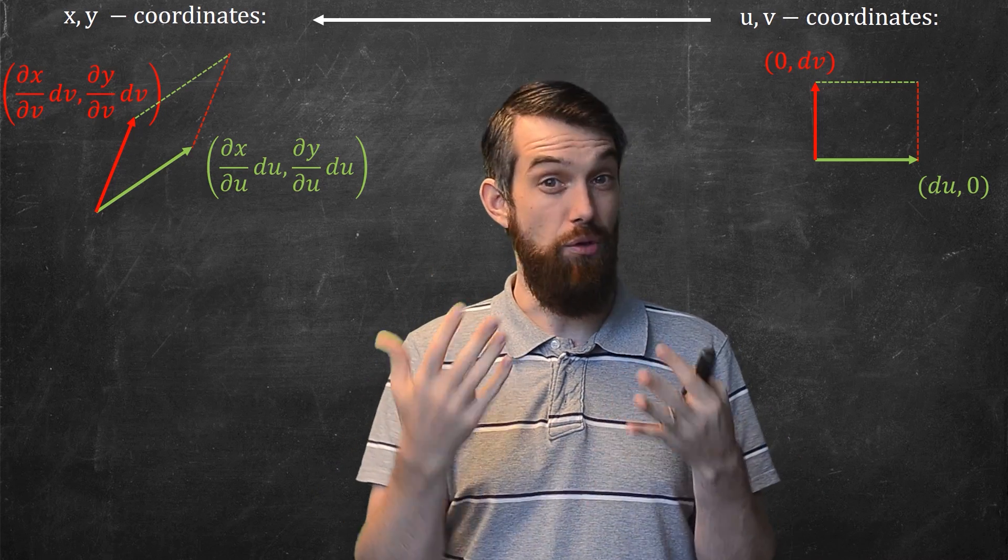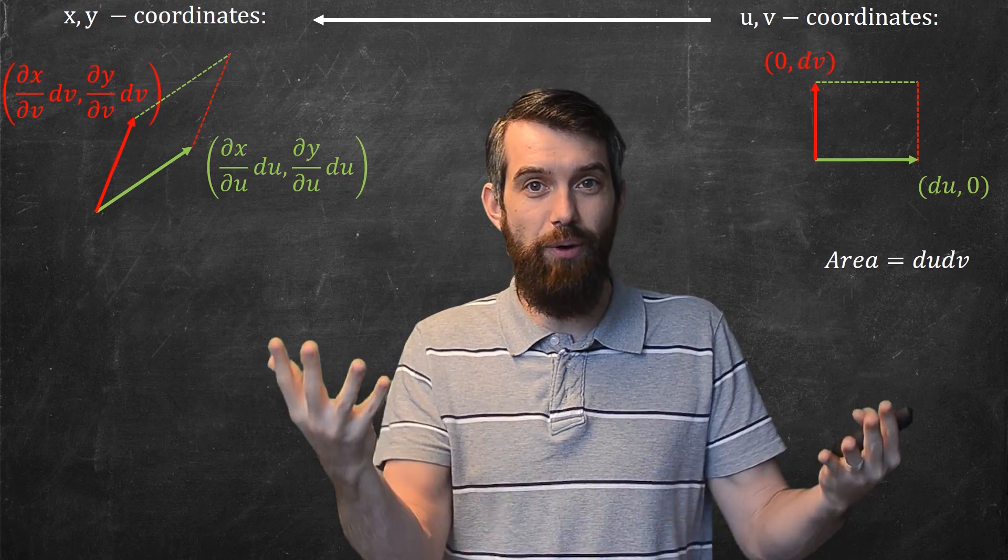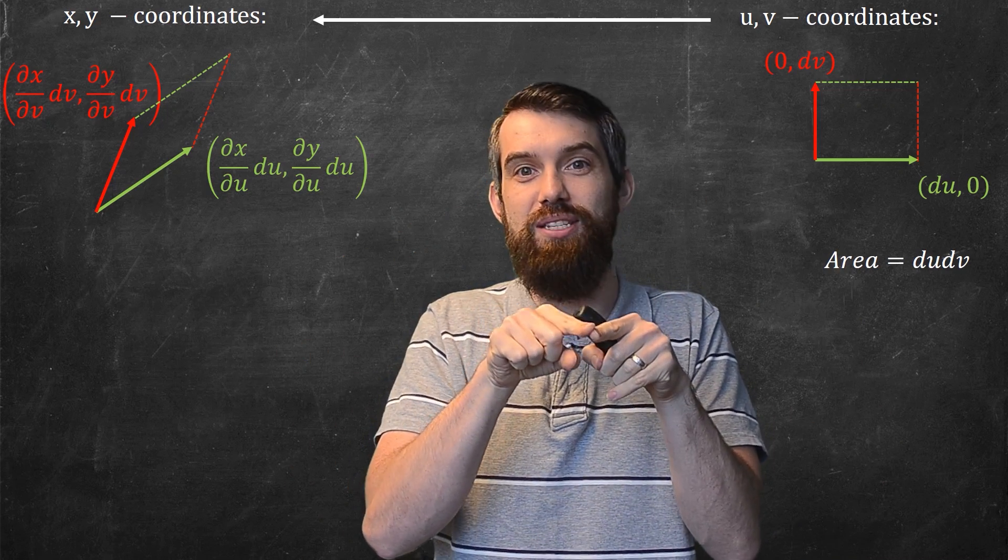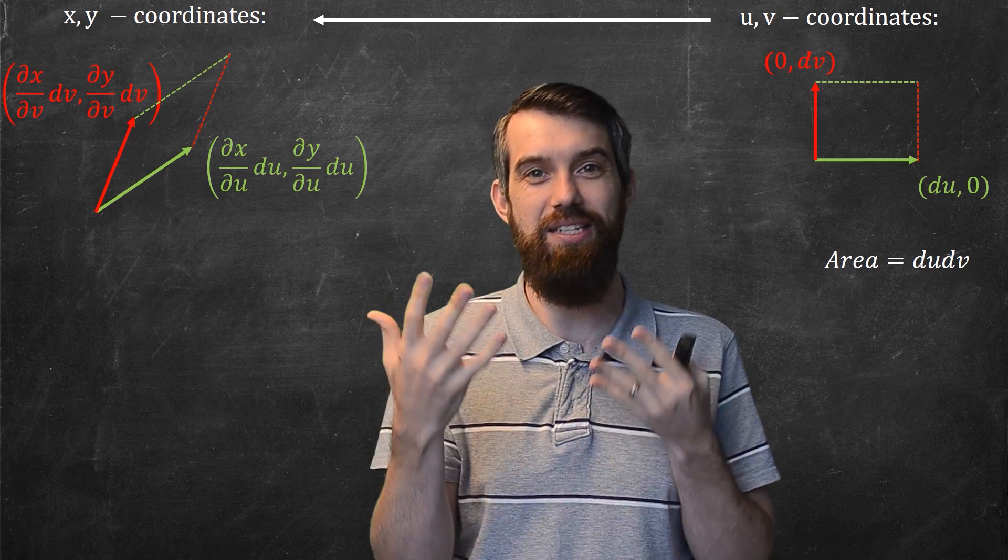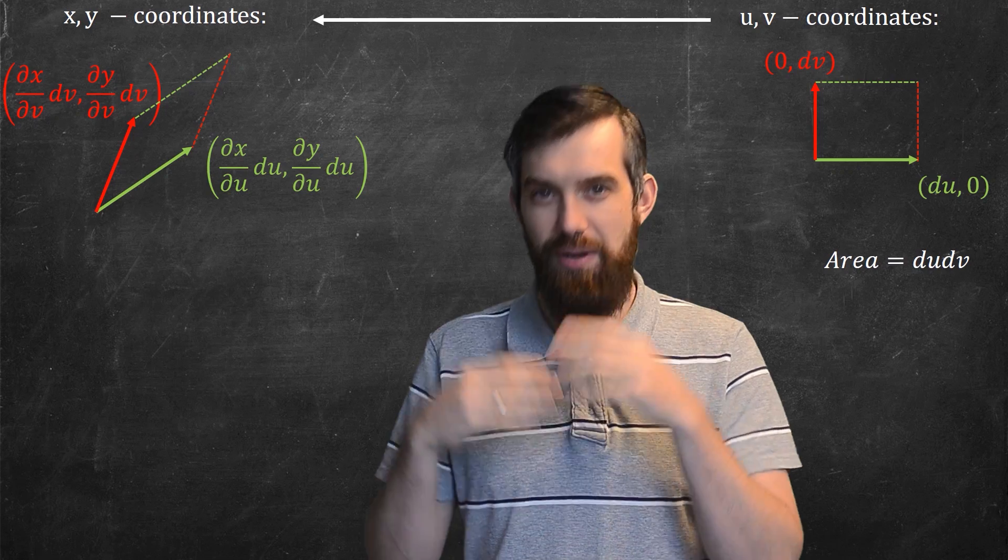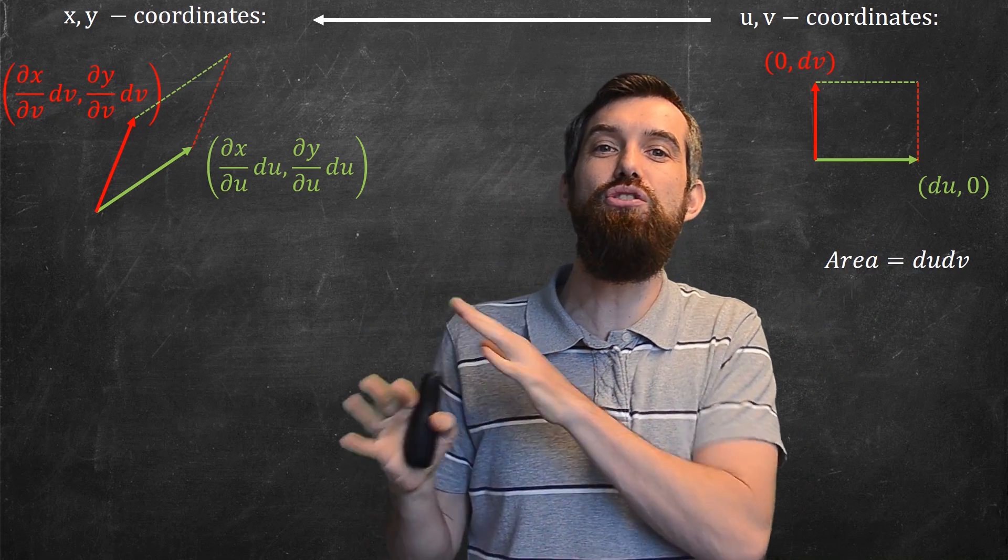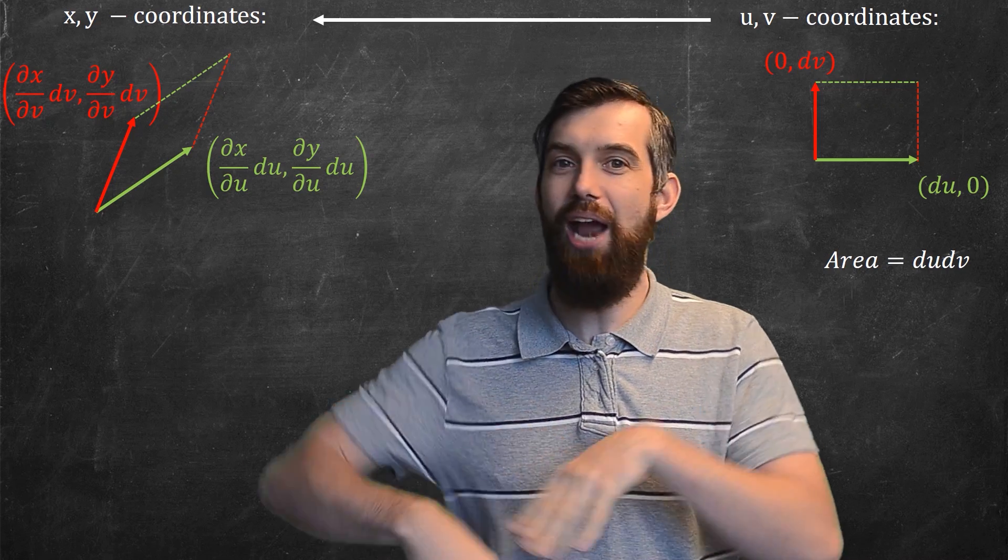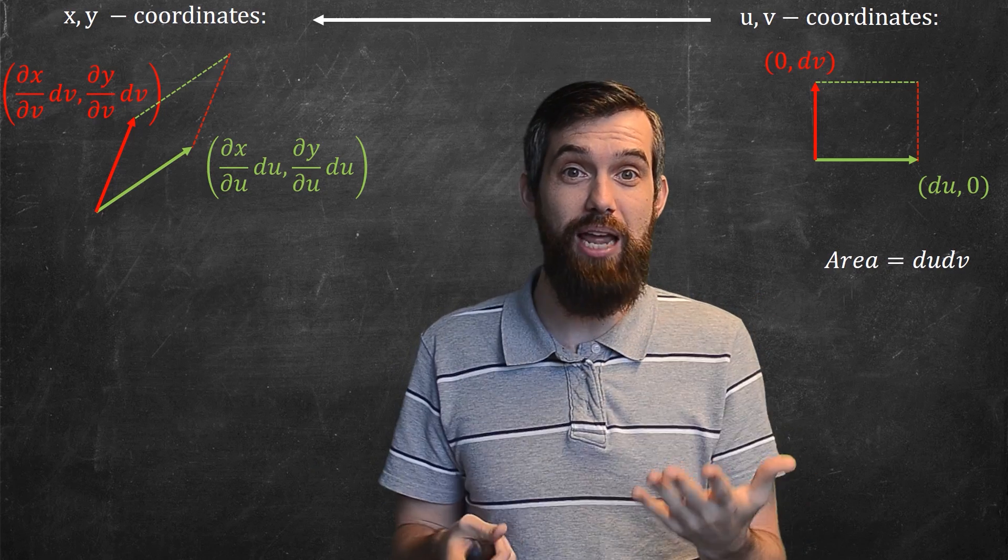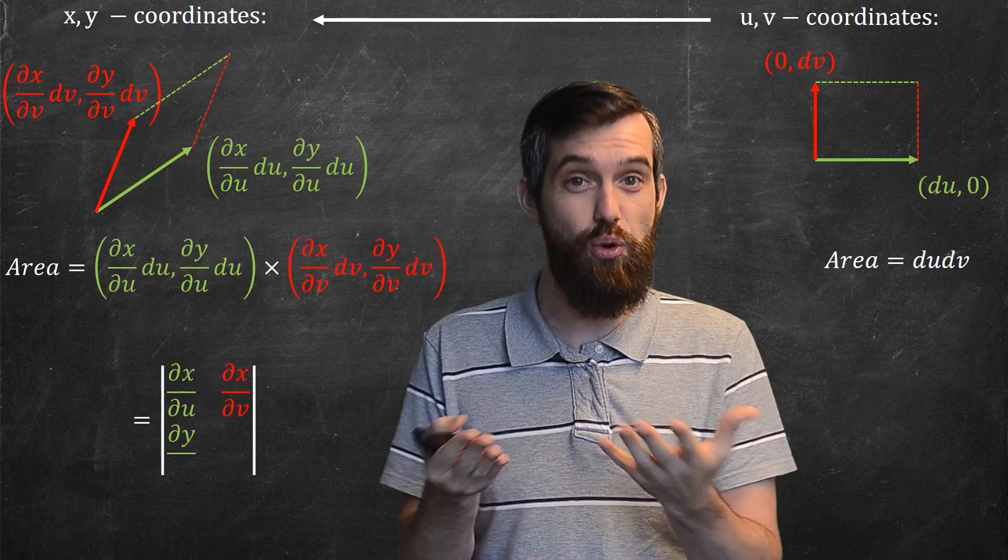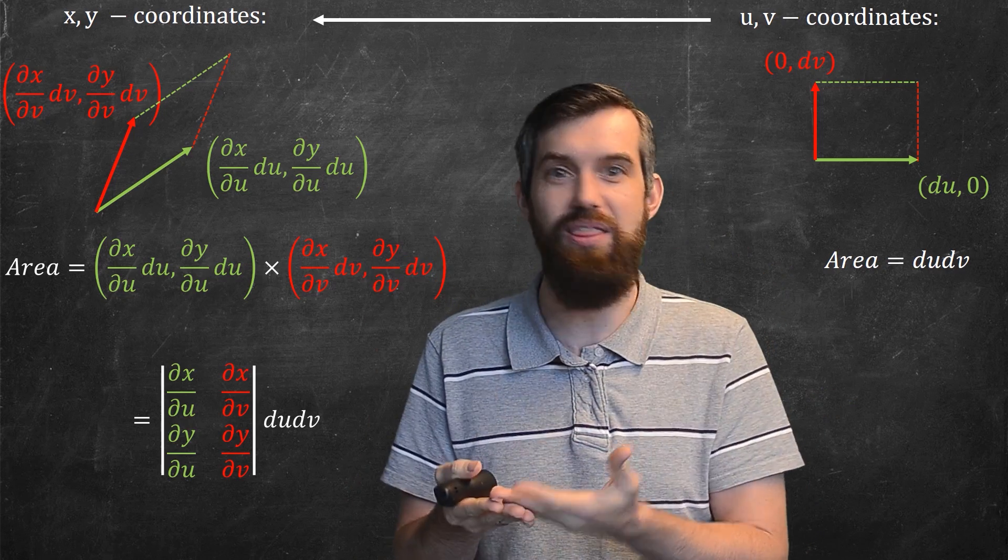Now back in the original uv coordinate system, the area was easy to express. It was just du times dv. So if you have a big region, you make it a bunch of little rectangles. These little rectangles have areas du dv, exactly what we've seen when we defined double integration. But now if I ask the area for this same region but then mapped back into the xy coordinate system, well, area of a parallelogram is a cross product. So what is the area of this new parallelogram? Well, it's just going to be the cross product of these two little vectors. And the cross product of those two different vectors is the determinant that we've seen before.